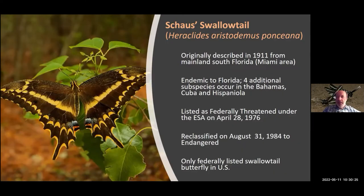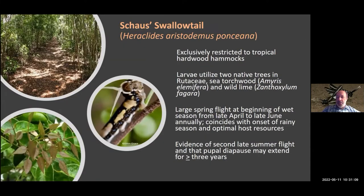Schaus' Swallowtail is an incredibly charismatic butterfly exclusively restricted to a very specialized system called hardwood hammock. Unlike many other swallowtails that navigate large open areas, this butterfly flies more like a Zebra Longwing, navigating within the deep, dense understory of tropical hardwood hammock. It has at least two flights in Florida — a dominant spring flight happening right now and a slightly later flight in late summer. There is evidence it can hold over in the pupal stage for many years, driven by the rainy season — it overwinters as a pupa and emerges when the spring rains arrive.